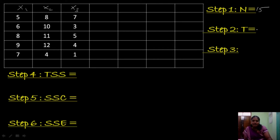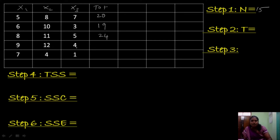The second step is we calculate the value of T. T is nothing but the sum of all observations given in our problem. Let me first calculate the total row-wise: 5 plus 8 is 13 plus 7 is 20; 6 plus 10 is 16 plus 3 is 19; 8 plus 11 is 19 plus 5 is 24; 12 plus 9 is 21 plus 4 is 25; 7 plus 4 is 11, plus 1 is 12.